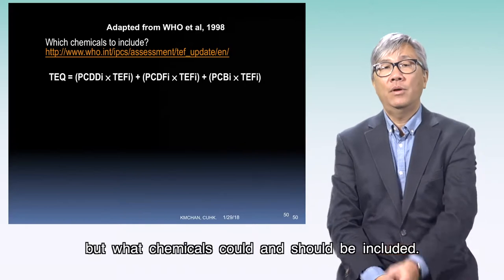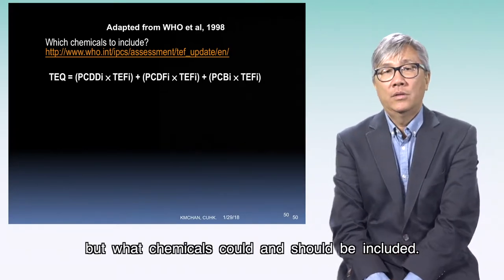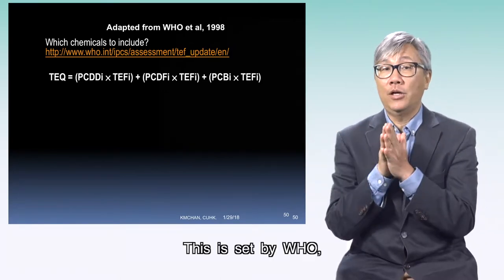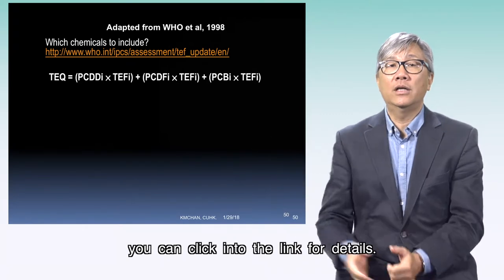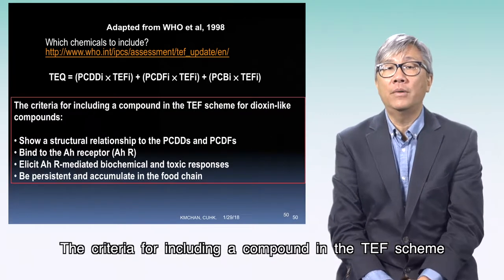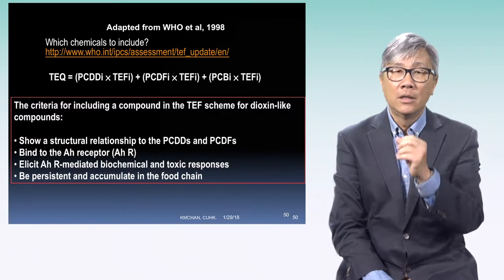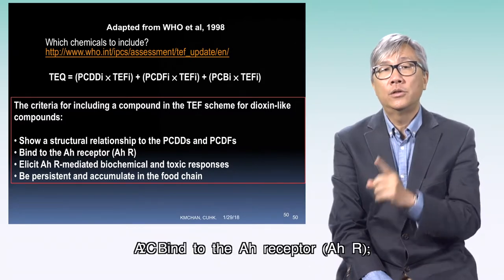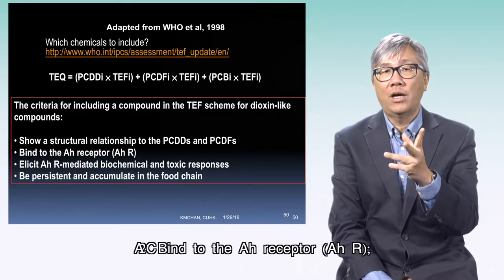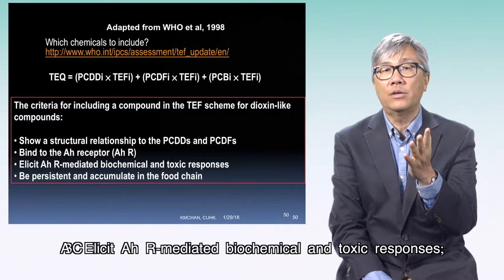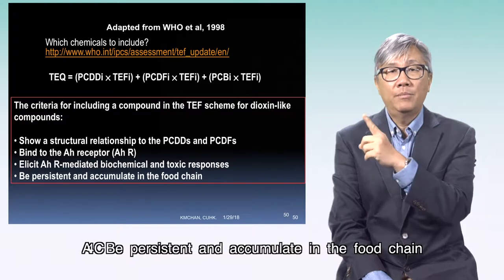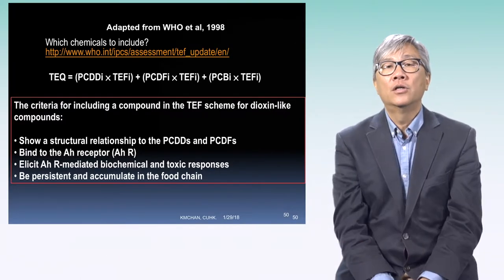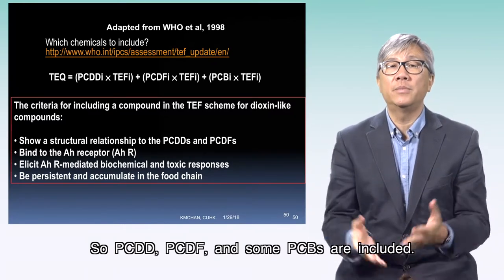That's the formula — but what chemicals could and should be included? This is determined by the WHO (World Health Organization); you can click the link for details. The criteria for including a compound in the TEF scheme for dioxin-like compounds are: one, it shows a structural relationship to PCDDs and PCDFs; two, it binds to the AH receptor, elicits AH receptor-mediated biochemical and toxic responses, and is persistent and accumulates in the food chain. So PCDDs, PCDFs, and some PCBs are included.